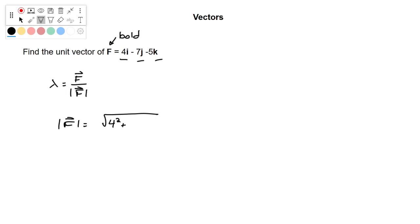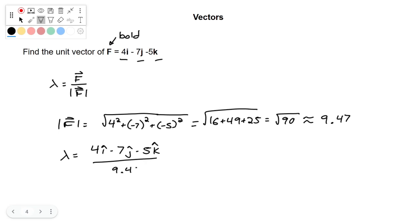So that's going to be the square root of 16 plus 49 plus 25, which is radical 90. This comes out to be about 9.47. So now our unit vector is going to be 4i minus 7j minus 5k divided by 9.47. And if we divide these terms out, we'll divide each component of the vector by 9.47. We come out with 0.42i minus 0.74j minus 0.53k.